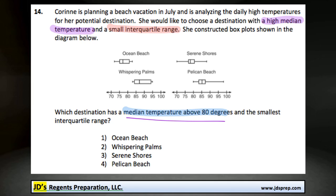We can see Ocean Beach has a median less than 80, so it can't be Ocean Beach. We have the same problem with Serene Shores — it's less than 80 as well. Pelican Beach and Whispering Palms are both above 80, so those two work.